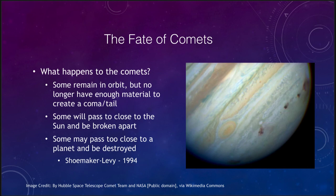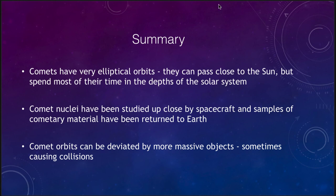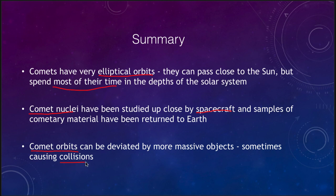To summarize what we've covered: comets have very elliptical orbits, passing close to the sun while spending most of their time in the depths of the solar system. Their nuclei have been studied up close by spacecraft, with samples of cometary material even returned to Earth. Comet orbits can be deviated by more massive objects such as the planets, sometimes causing collisions. That concludes our lecture on comets — we'll be back next time for another topic in astronomy. Have a great day everyone, and I will see you in class.